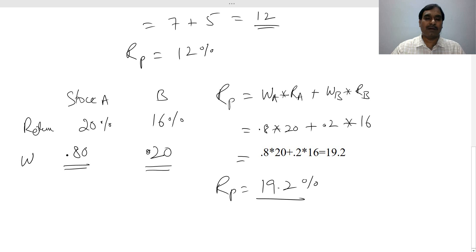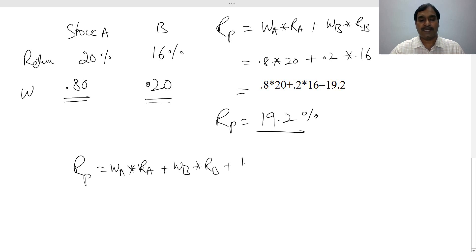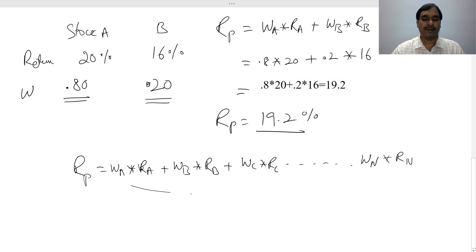If you want a higher return, you prefer investing more in the stock with the higher return. If you want to balance returns, you can combine both stocks. For multiple assets, you can extend the formula: Return on Portfolio = (W_A × R_A) + (W_B × R_B) + (W_C × R_C) + … + (W_N × R_N). In my next video, I will show how to calculate portfolio return in Microsoft Excel.